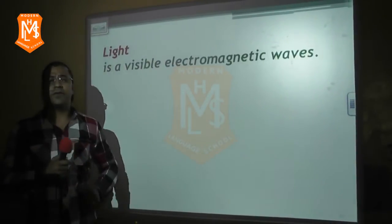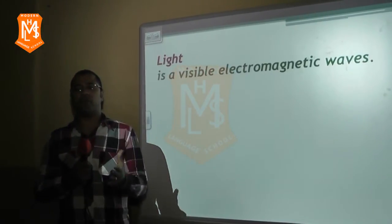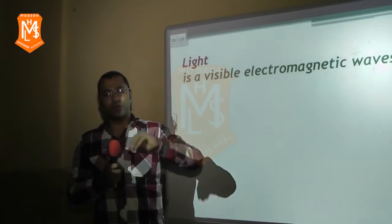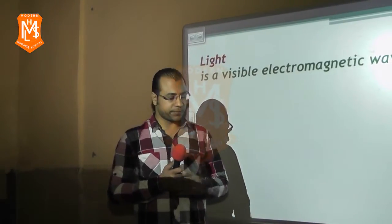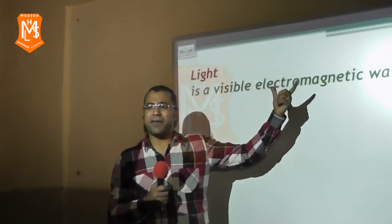Light is a visible electromagnetic wave. What is meant by electromagnetic waves? Electromagnetic waves are waves which travel through space with constant velocity which equals 3 × 10^8 meters per second. Electromagnetic waves have the ability to travel through space.